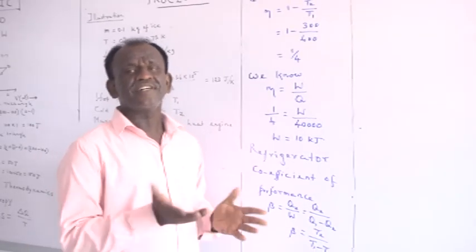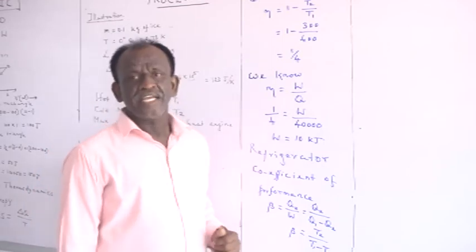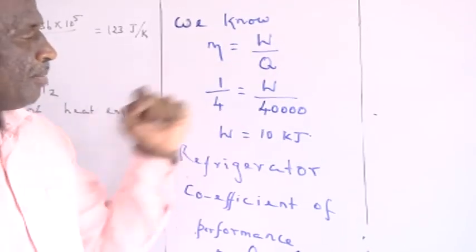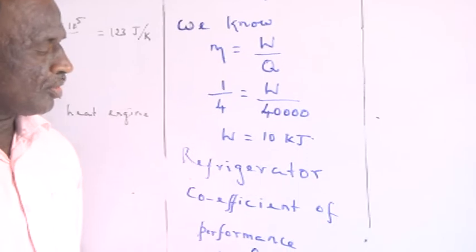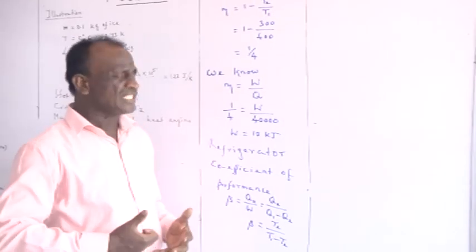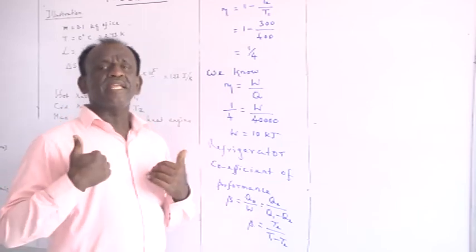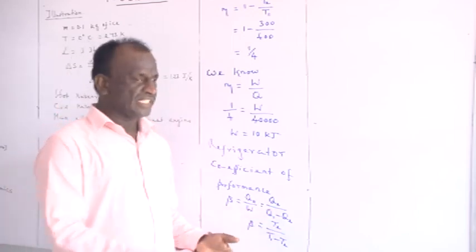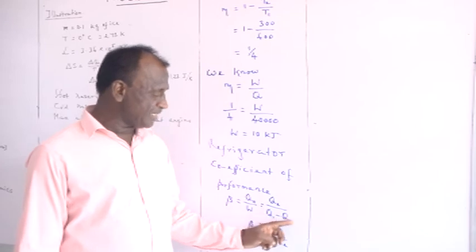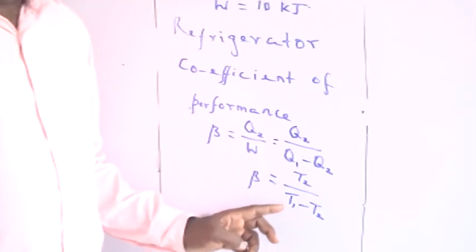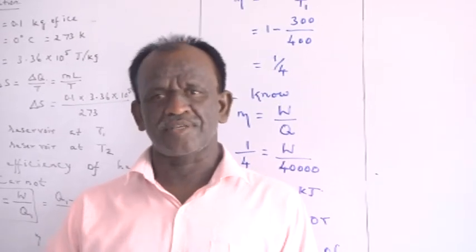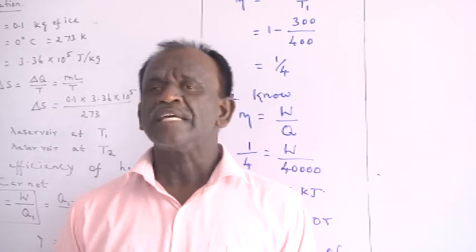Now, we have another device which is the reverse of the heat engine, called a refrigerator. In place of efficiency, we use a quantity called the coefficient of performance, given by β. While efficiency is η equal to W/Q, for a refrigerator β equal to Q2/W, where Q2 is the amount of heat extracted from the cold body and Q1 is the heat supplied to the hot body. The work done is W equal to Q1 minus Q2. The coefficient of performance is given by β equal to T2/(T1 − T2). In this video, I have shown a simple way of calculating work done for various thermodynamical processes. I hope you enjoy learning these thermodynamical processes.